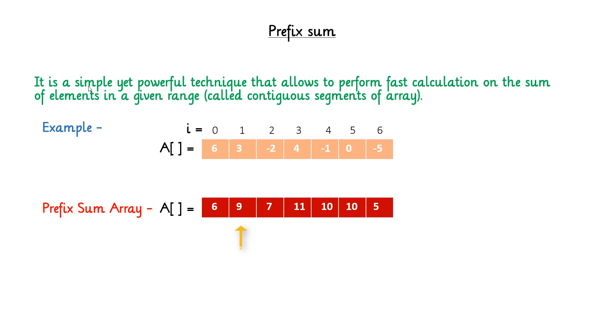Like that, for the second element, we will take previous element plus current element from the input array, 6 plus 3 equals 9. In the similar way, we will keep on adding current element to the previous element and then we will get the prefix array.